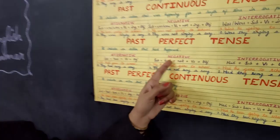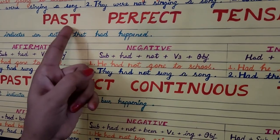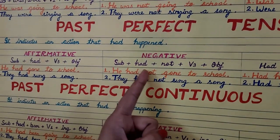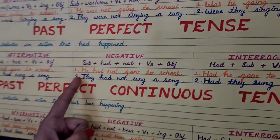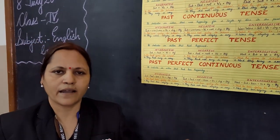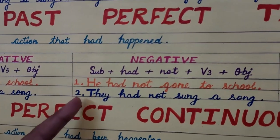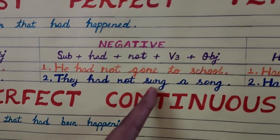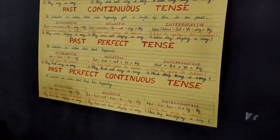Now let's move towards the negative sentence of past perfect tense. The structure is: subject plus had plus not plus verb three plus object. For example: He had not gone to school. They had not sung a song. Here he and they are the subject, had is the helping verb, gone and sung are the third form of the verb, and school and song are the object.